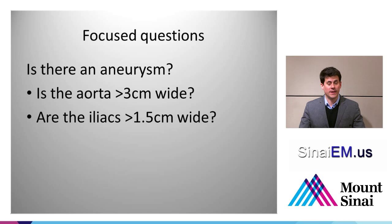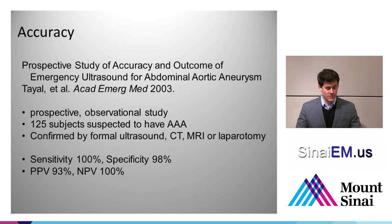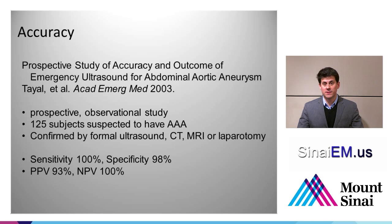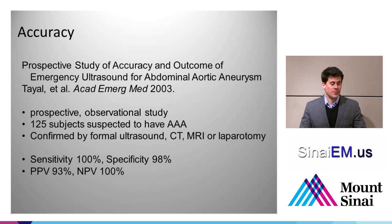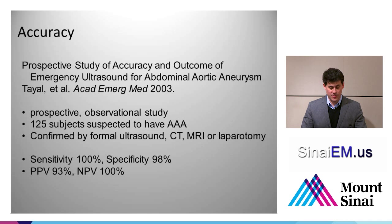The focused questions for assessment of the abdominal aorta are: Is there an aneurysm? Is the aorta greater than 3 centimeters? Are the iliac arteries greater than 1.5 centimeters? One study in an emergency department population evaluated 125 patients suspected of having AAA by ultrasound, compared against radiology ultrasound, CT, MRI, or laparotomy as the gold standard. Sensitivity was 100% and specificity was 98%. This also explains why many patients with aneurysm are followed using ultrasound over time instead of repeated CT scans with radiation and increased cost.